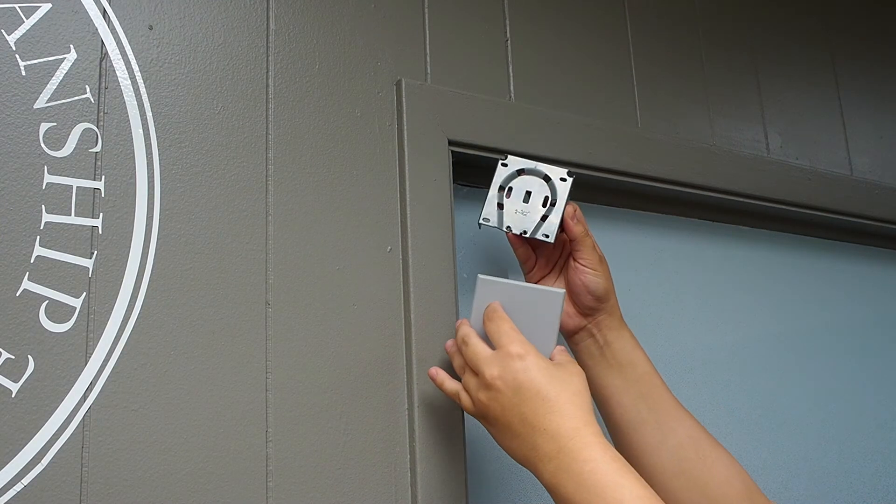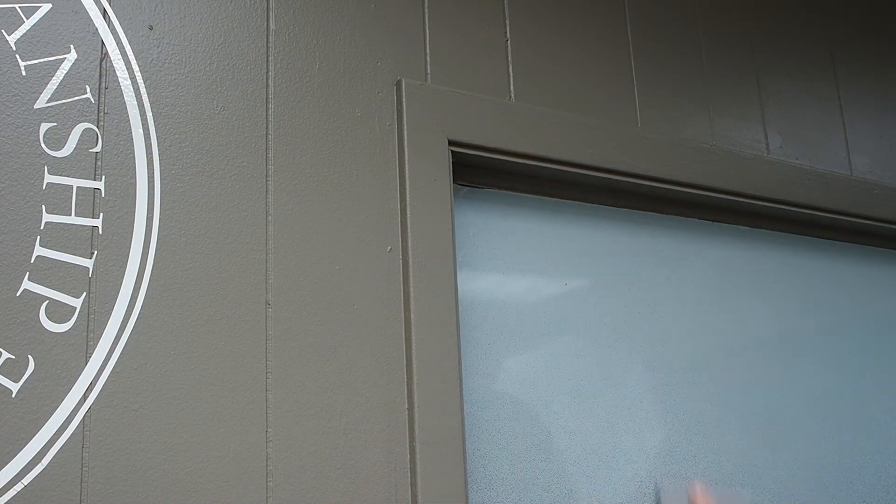Inside mount roller shade brackets need at least three and a half inches to fit fully inside the window. A way to work around this is by using an end cap like this one. It's a plastic piece that covers the outside of the bracket and gives the ends of the roller shade a finished look. All outside mount shades will come with end caps automatically.